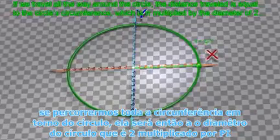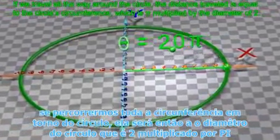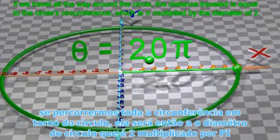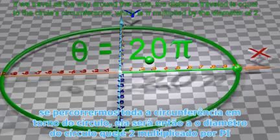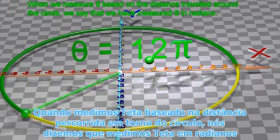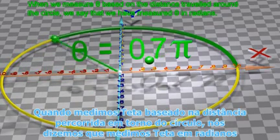If we travel all the way around the circle, the distance traveled is equal to the circle's circumference, which is π multiplied by the diameter of 2. When we measure θ based on the distance traveled around the circle, we say that we have measured θ in radians.